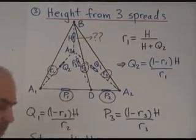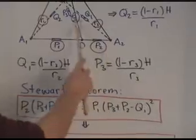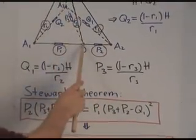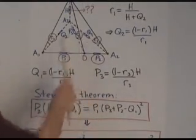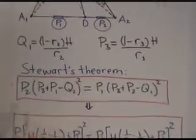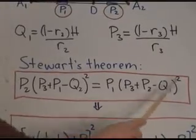Now I'm going to have to invoke a theorem called Stewart's theorem, which is just a theorem about this horizontal triangle A1, A2, A3, and this additional point D. With these quadrants as marked here, Stewart's theorem says the following. That P2 times P3 plus P1 minus Q2 all squared equals P1 times P3 plus P2 minus Q1 all squared.